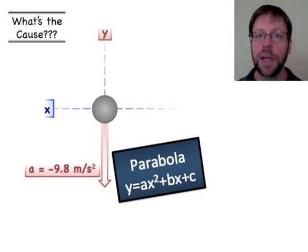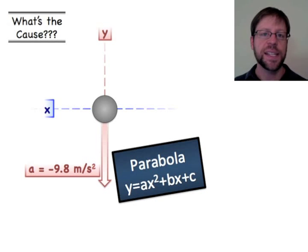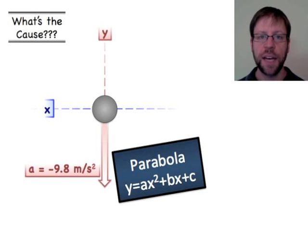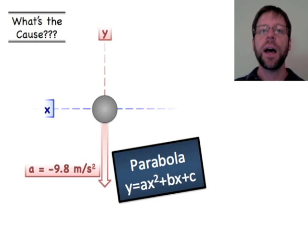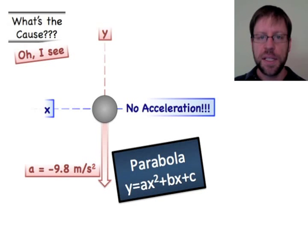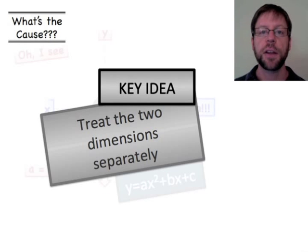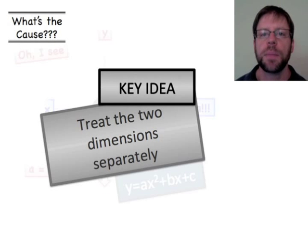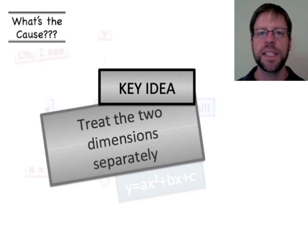To get a parabola, you need constant acceleration in one dimension — in this case the vertical — with a constant value of negative 9.8 meters per second squared from gravity. In the other dimension, you need zero acceleration. The key idea is that you want to treat these two dimensions separately so you can simplify the problem.